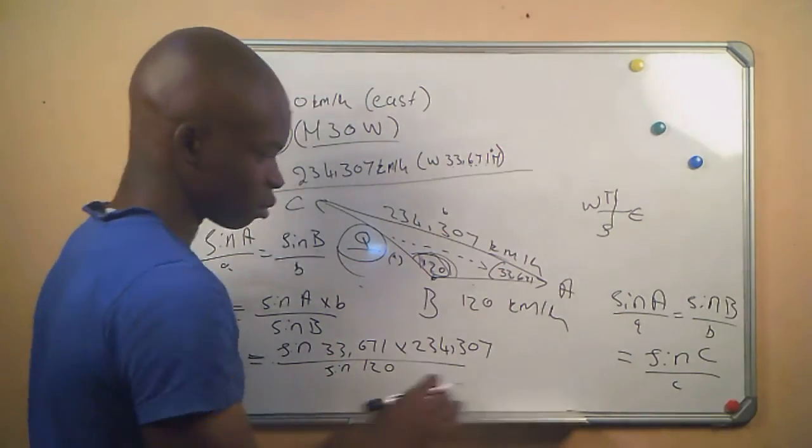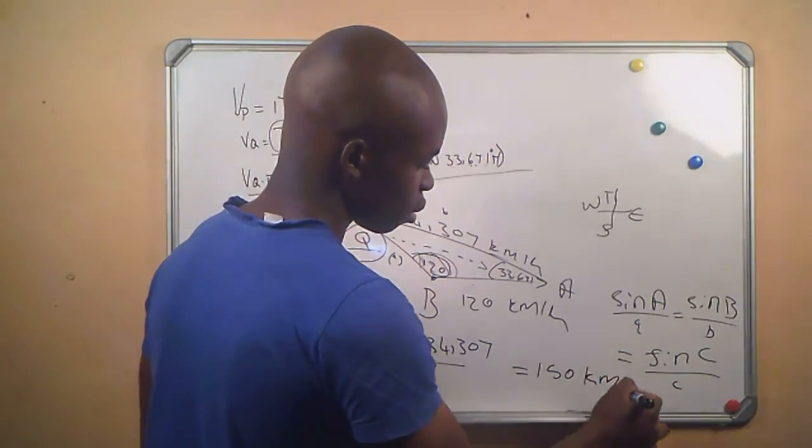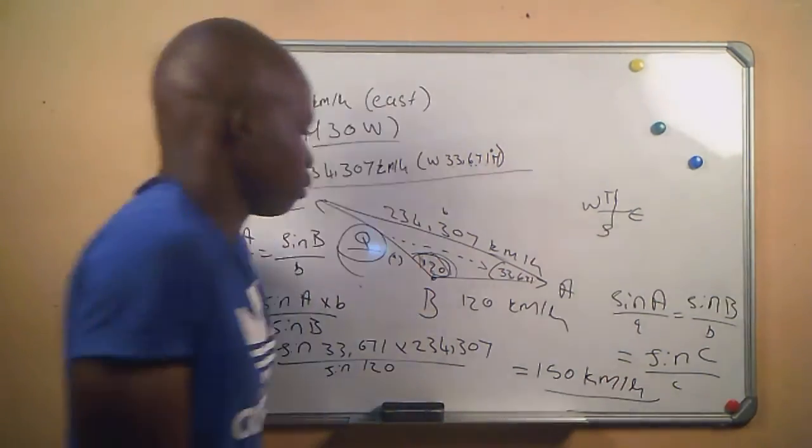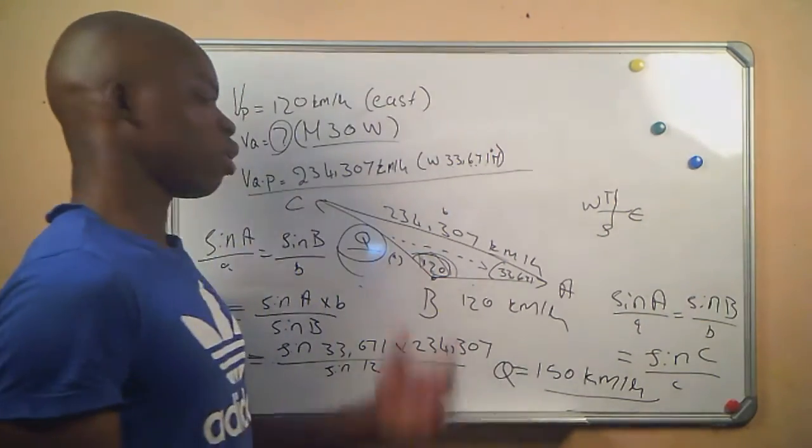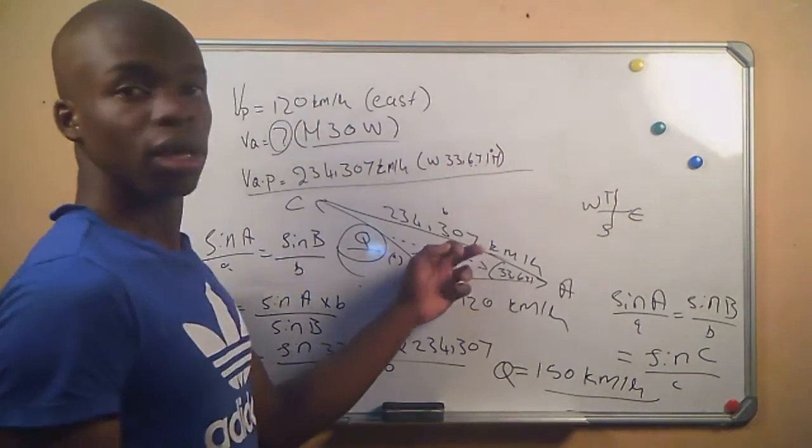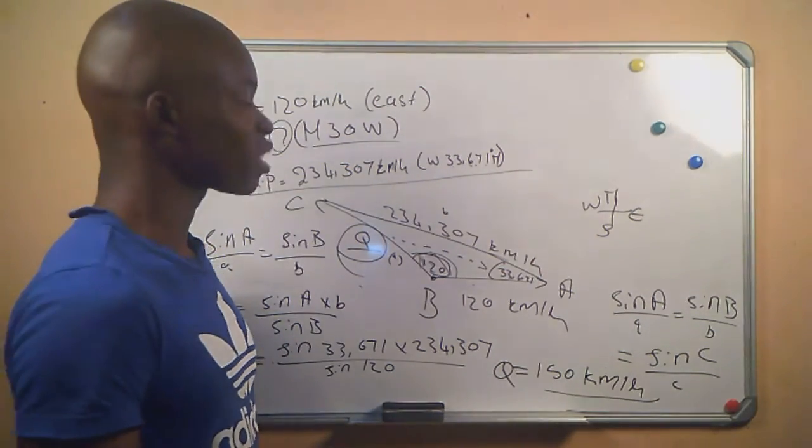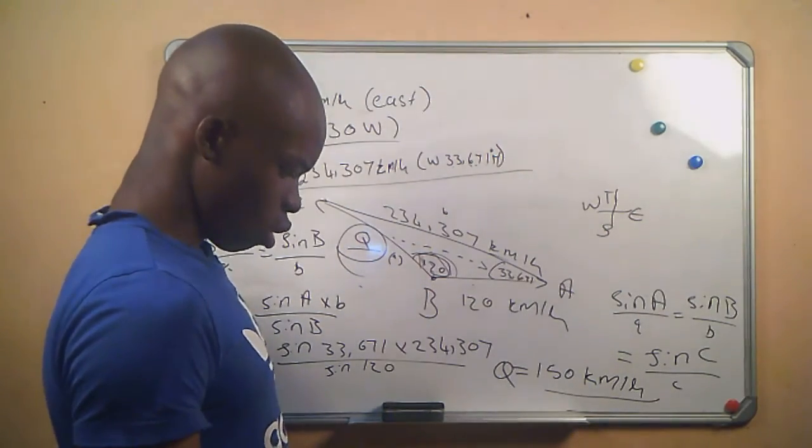And then I got that my answer is 150 kilometers per hour. And then we are done. That is the value of Q, and then we are done with this question. So the trick is here, you must get your structure right or else it's disaster.